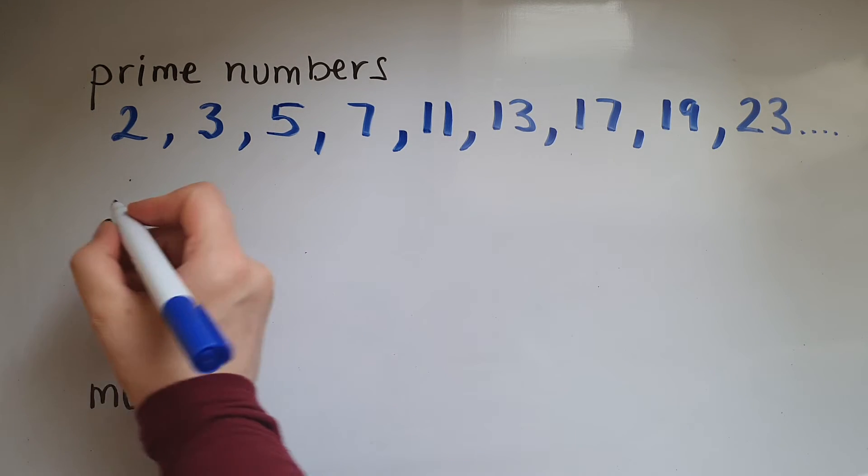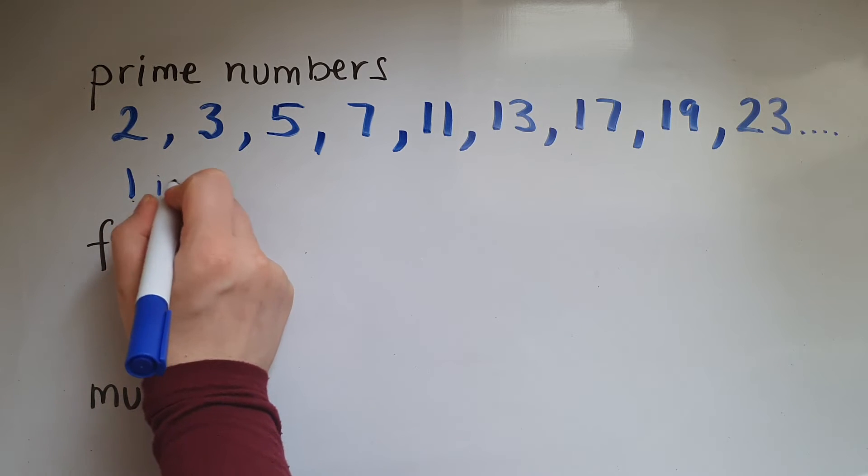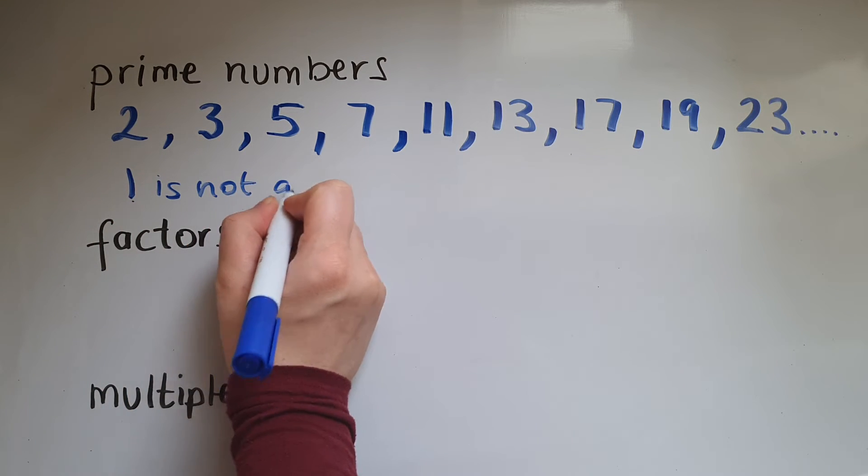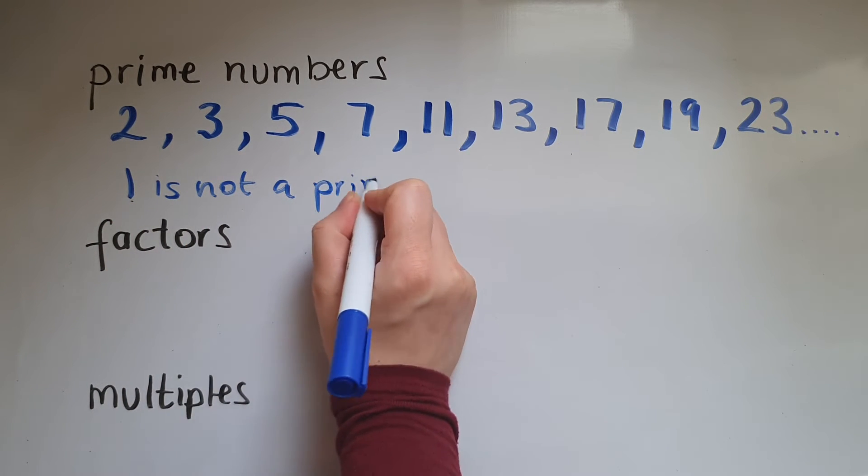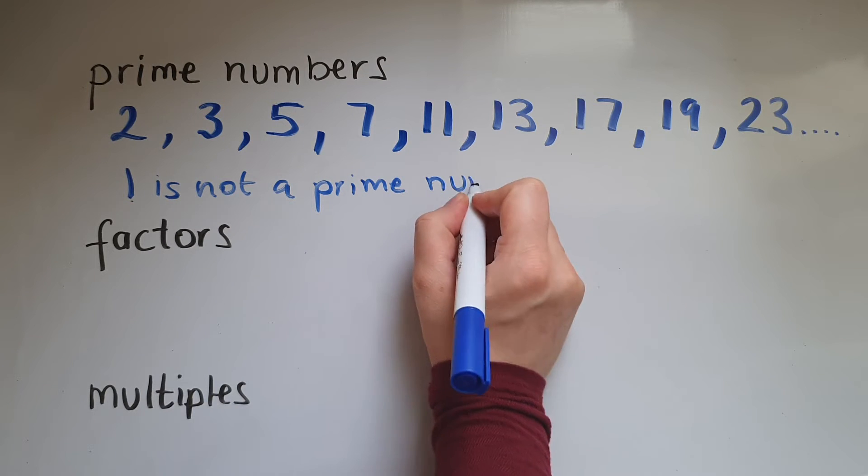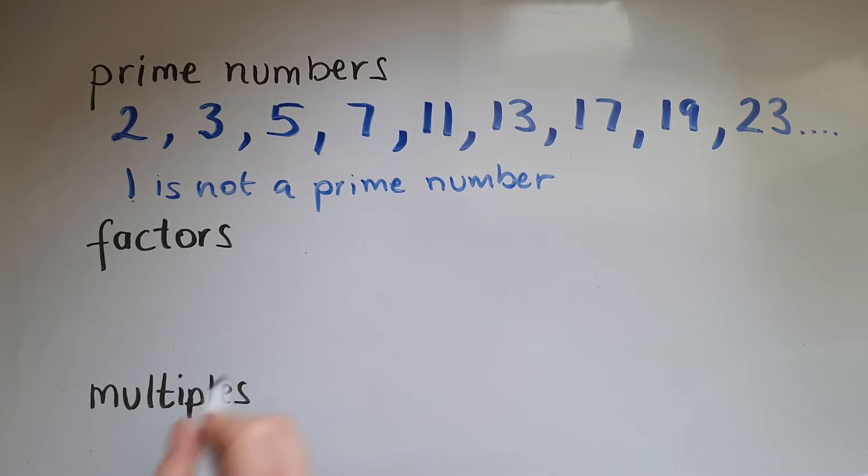One thing to always remember is that one is not a prime number. We said prime numbers can only be divided by themselves and one. When that is one, the number itself as well as one is the same. So one is not a prime number.